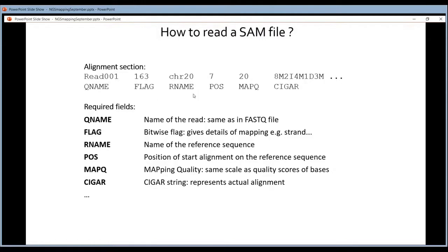I will come back on that. You will see where the alignment starts. This starts on chromosome 20, position 7. You will get a quality score for the mapping. This is a score that you interpret in the same way that you interpret the base quality scores. 20 means 99% confident. Then you have the CIGAR string. The CIGAR string represents the actual alignment. I will come back on that.